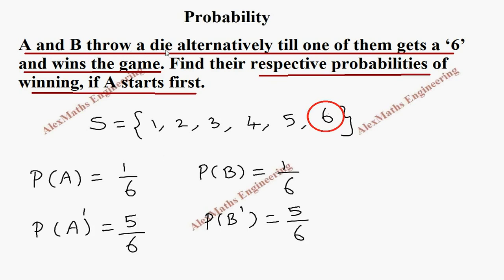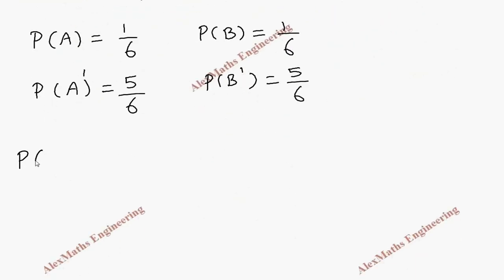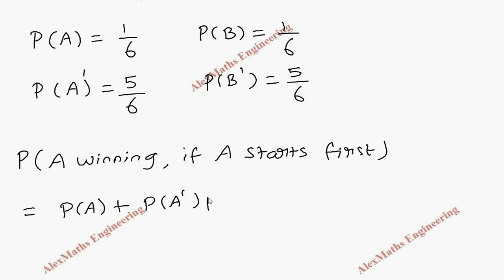Now they throw the die alternatively, and if A starts first, we're going to find the probability of A winning. When A gets 6, he wins—this is one chance. If A does not get 6, then B will get a chance to throw. When B does not get 6, again A will get a chance to throw and win. We are looking for A winning the game, so we're writing the chances of A winning. That's why this B is failing here, then A gets a chance.